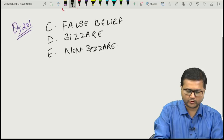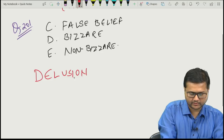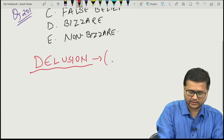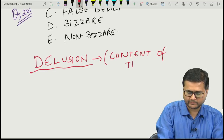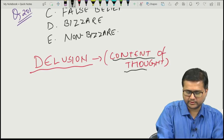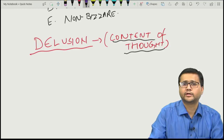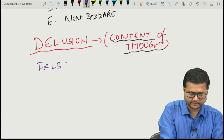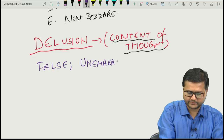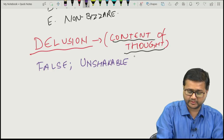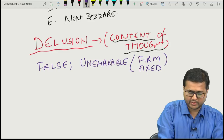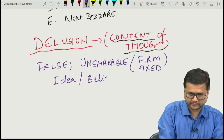Let us discuss the important concept of delusion. Delusion is a disorder of the content of thought. Delusion is a false, unshakable — meaning very firm — fixed idea or belief.